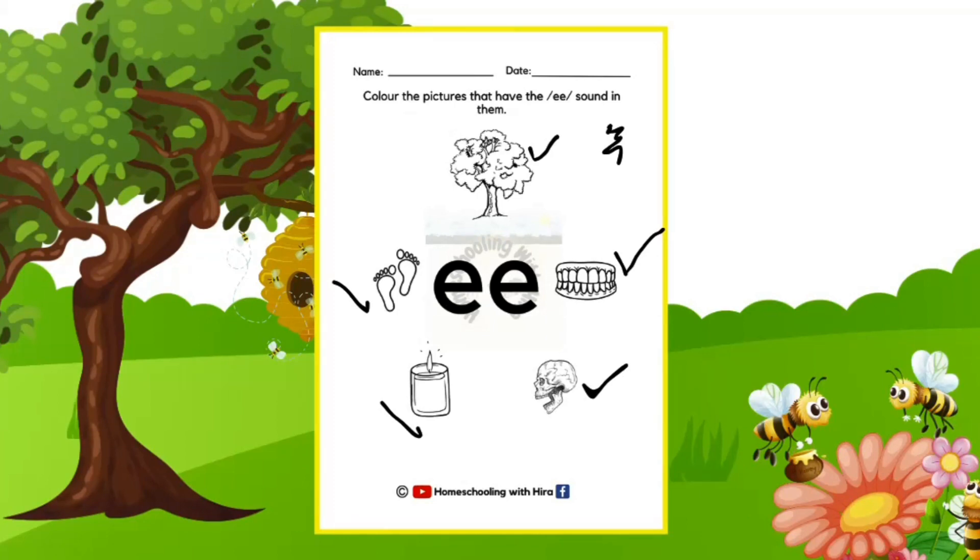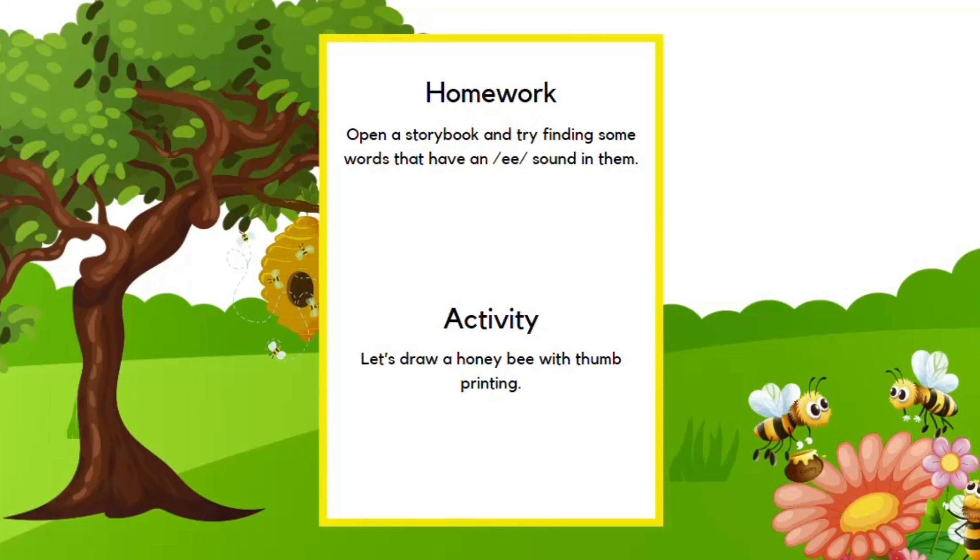And with this we are towards the end of our lesson. Here I'm giving you some homework. You need to open up a storybook and try finding some words that have an E sound in them. Try to read the sentences, or even if you don't want to read, just try to find out two E's written together and copy down that word in your notebook.